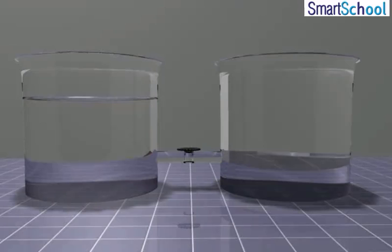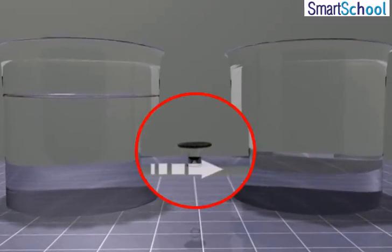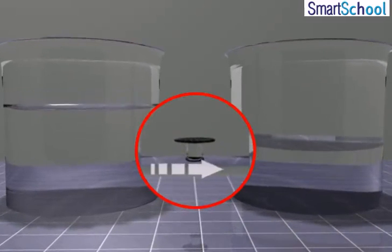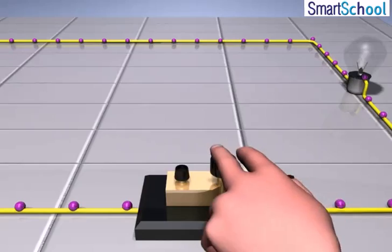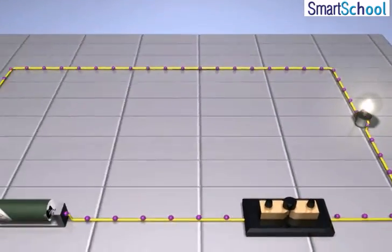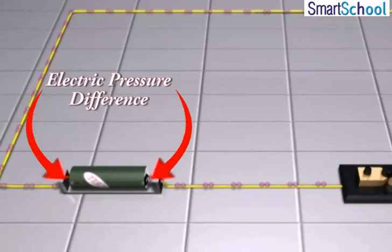When one end of the tube is connected to a water tank kept at a higher level such that there is a pressure difference between the two ends of the tube, water flows. Similarly, electrons move in a conducting wire only when there is a difference of electric pressure along the conductor. This difference in electric pressure is known as the potential difference.